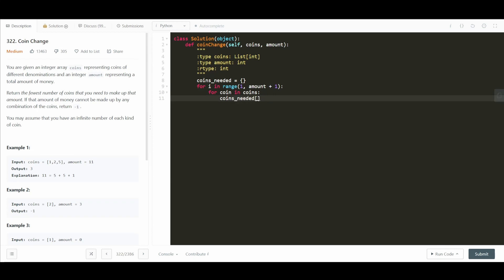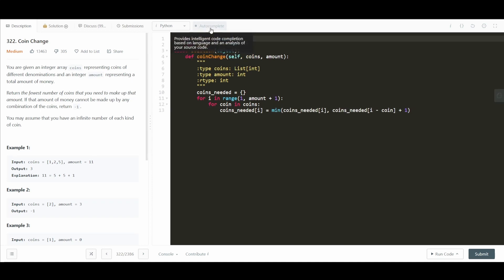Coins_needed at i is equal to the minimum of coins_needed at i and coins_needed at i minus coin plus 1. Now this won't work right now because Python, if you try to access a key in a dictionary that's not there, it's going to raise an error. So what I'm actually going to do is import from collections import defaultdict. And I'm going to create a default dictionary here.